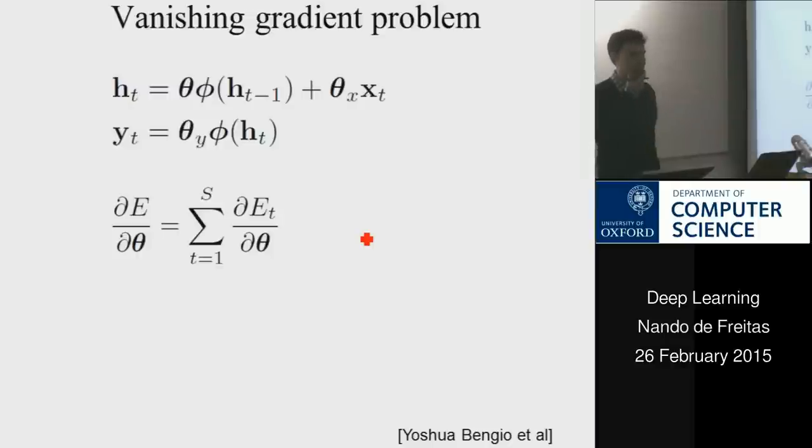But first, I want to mention why these methods have been with us for a long time. They weren't working. And the problem is that derivatives became zero when you backpropagate, or they exploded. They become not a number in your computer.